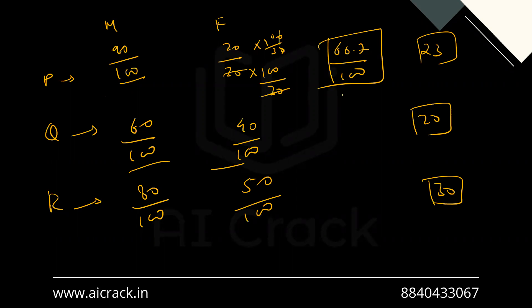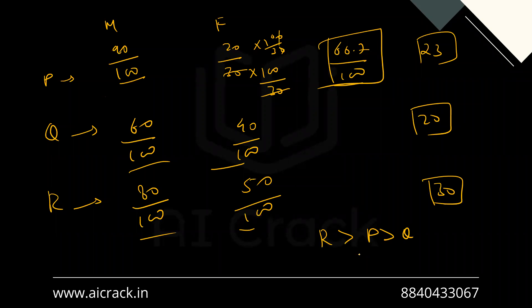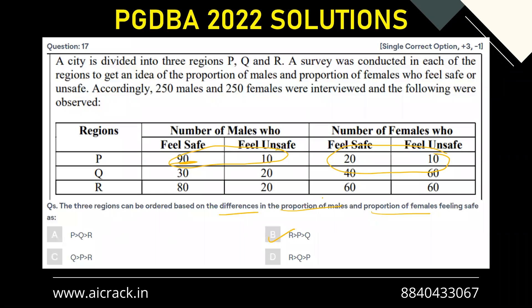Everything is now converted to the same base of 100, so we can compare these numbers. The ordering is R greater than P greater than Q. So option B is the correct answer: R is greater than P, which is greater than Q.